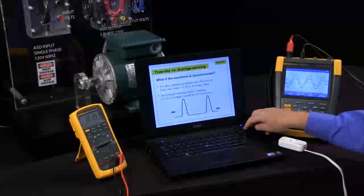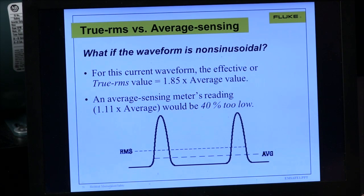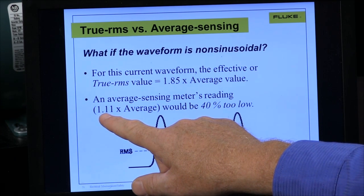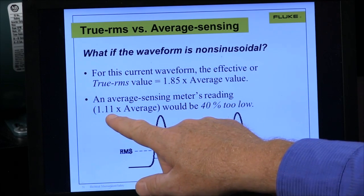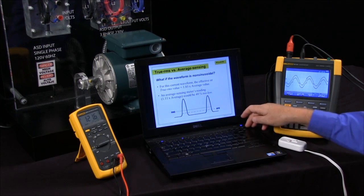So if we take a reading on a signal that is not a clean sine wave that has some distortion in it, the average responding meter takes the average, multiplies it by the same 1.11, but because the signal has changed, this is now the wrong number, and it's giving us the wrong RMS measurement.